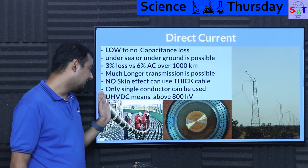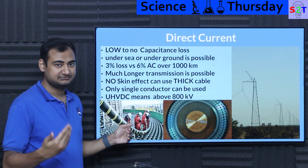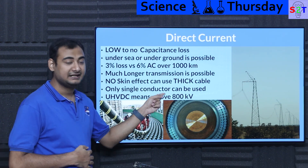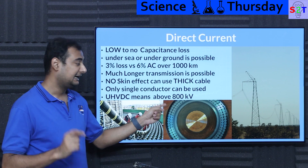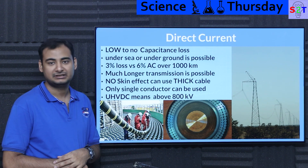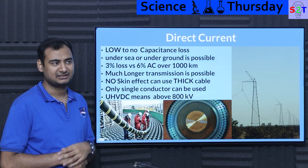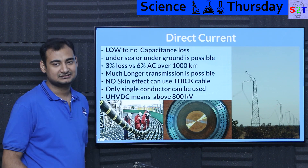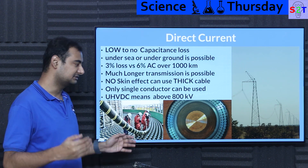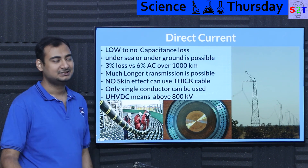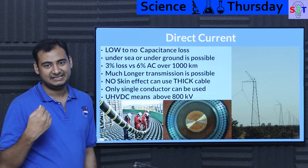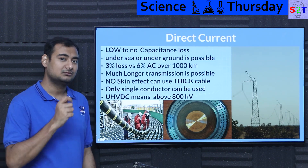Ultra high voltage DC simply means anything at or above 800 kilovolts. The threshold of 800 kV is the industry definition, though arguably 1000 kV would feel more intuitive as the boundary for 'ultra' high voltage.